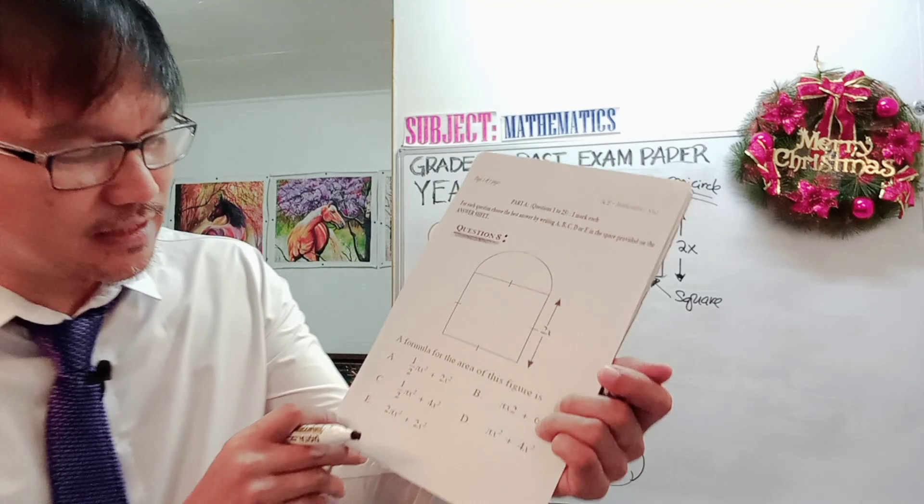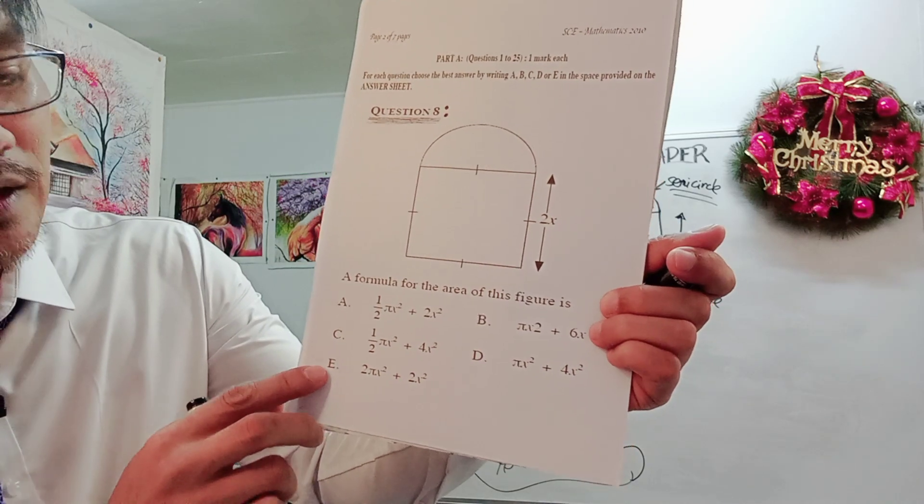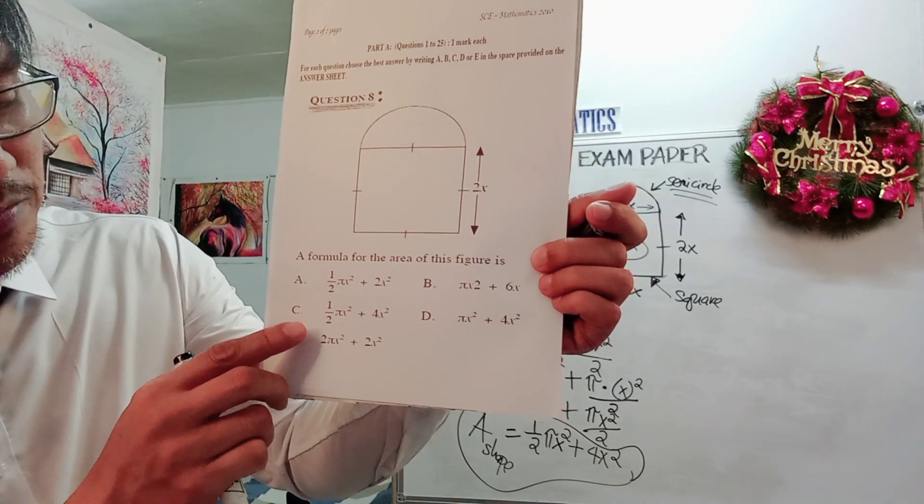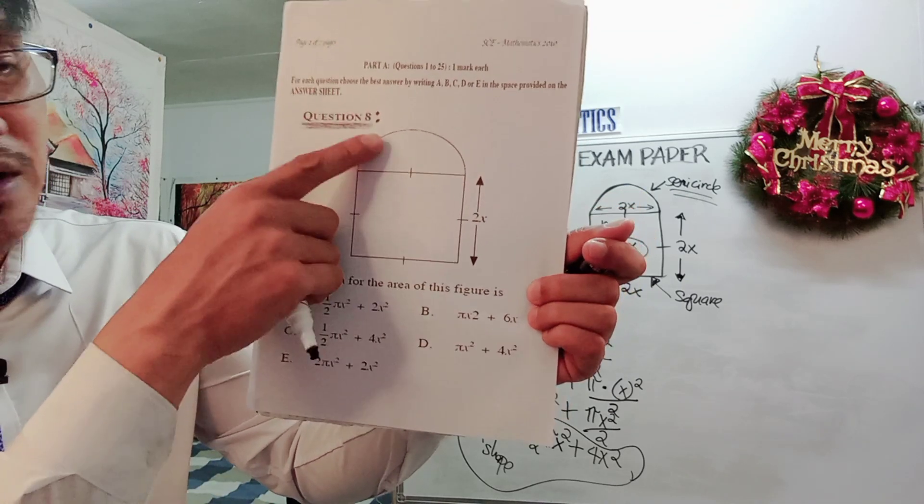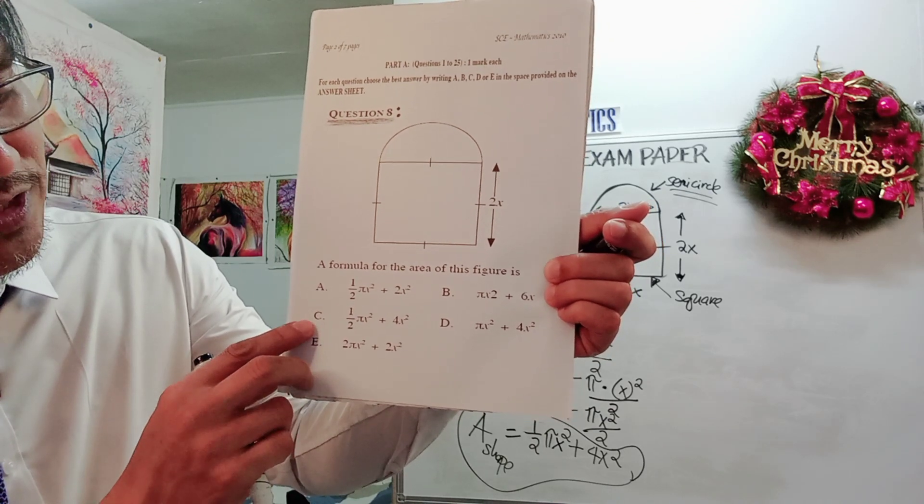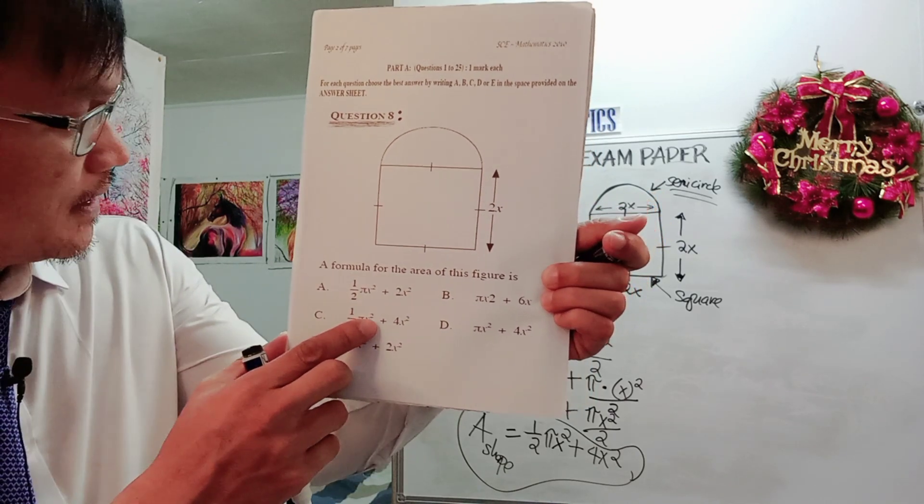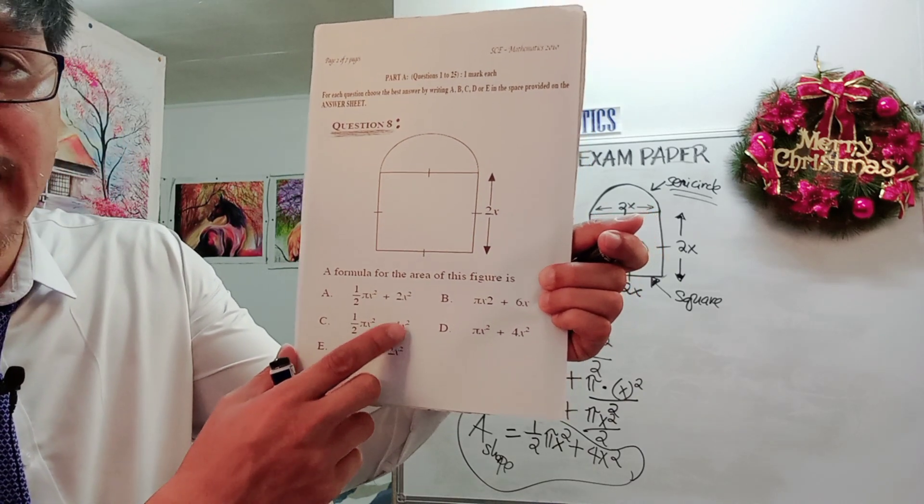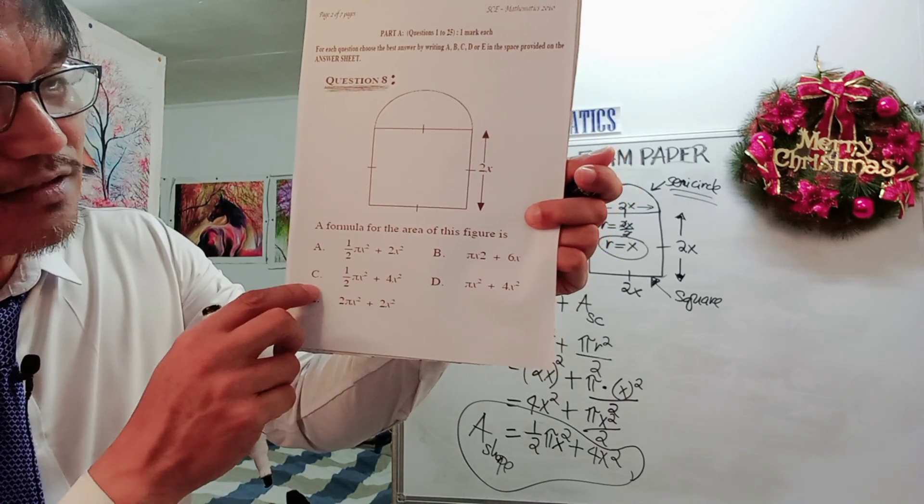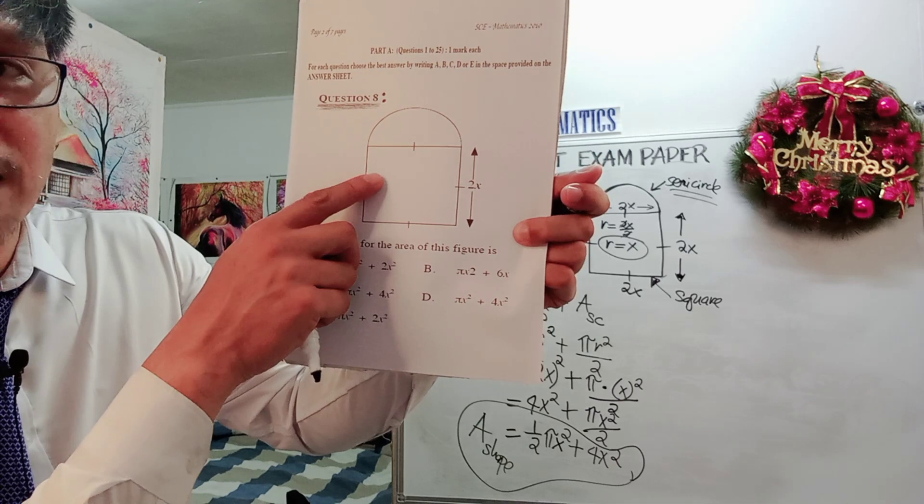Let's now check, let us double check our options here. A, B, C, D, and E. Which of these 5 options is giving us the formula to find the area of this composite shape? It looks like it is one half, letter C is giving us that same answer: one half pi x square plus 4x square. Letter C is the correct answer for finding the formula for the area of this composite shape.